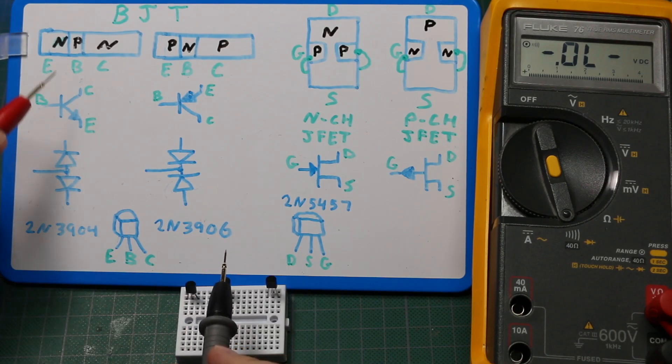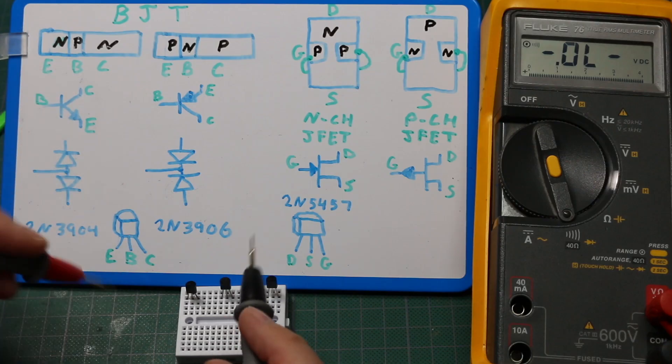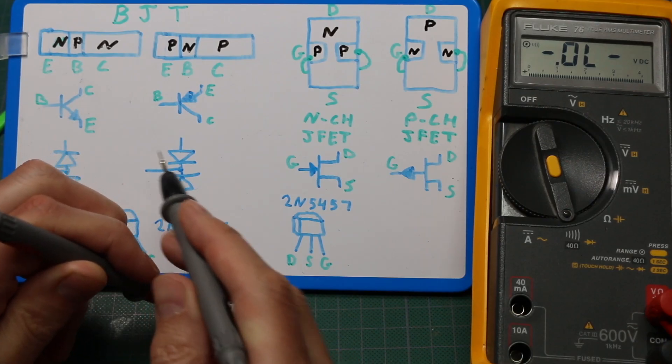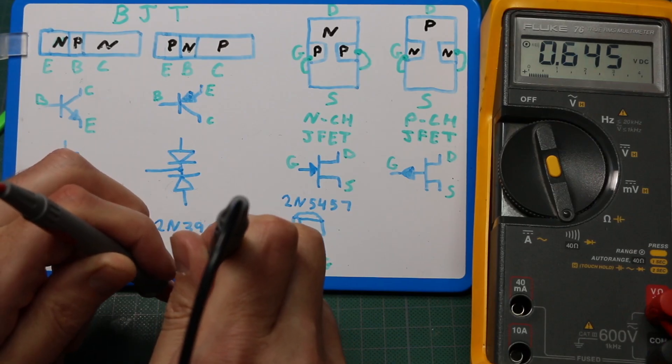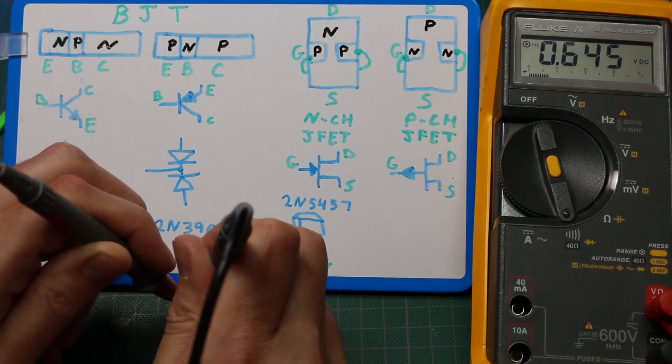Now to check the PN junction base to collector, I will put the positive again on the base, and the negative on the collector. 0.645. Another silicon diode drop.